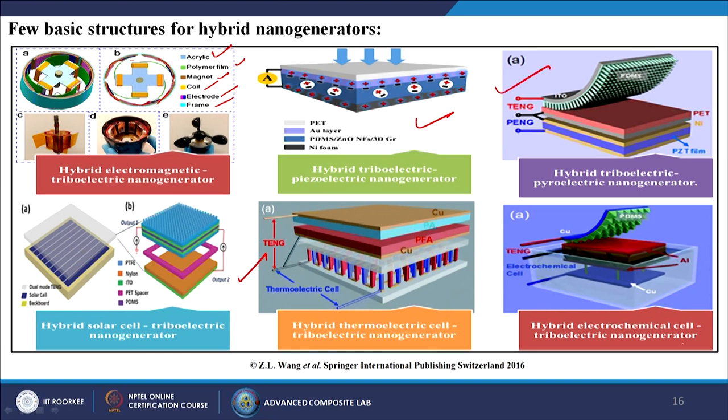For AC-DC combinations, there is the hybrid thermoelectric cell with triboelectric nanogenerators and the hybrid electrochemical cell with triboelectric nanogenerators — meaning chemical reactions take place, one charge is transferred, and the opposite charge material acts as the triboelectric material to generate electricity. By any means — whether the material generates electric ions through its own properties or through other means — positive and negative opposite materials are used as triboelectric materials to generate electricity.